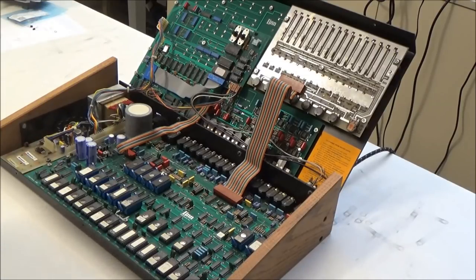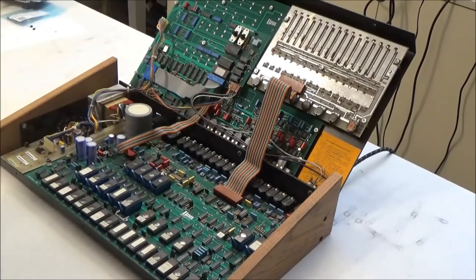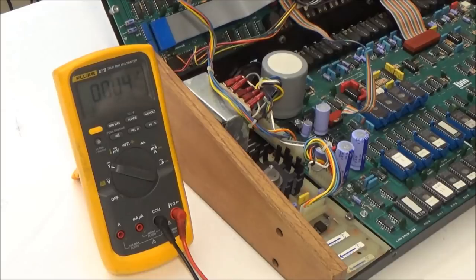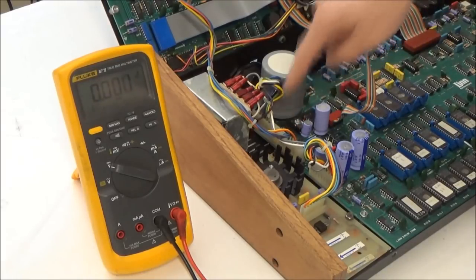The next thing that I'm going to check are the power rails. The LinnDrum has a plus and minus 15 volt supply as well as a 5 volt supply for the CPU, and then additionally it has a 5 volt memory rail for the battery backup.